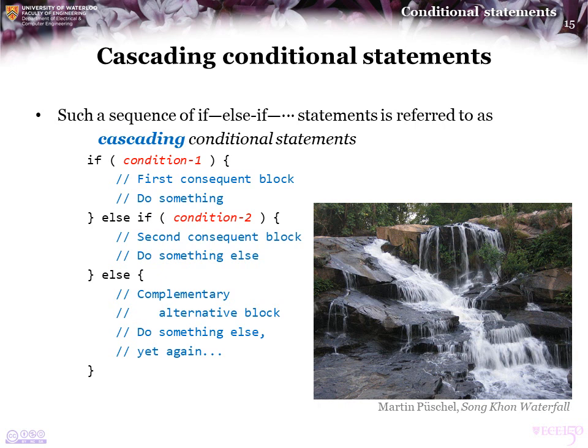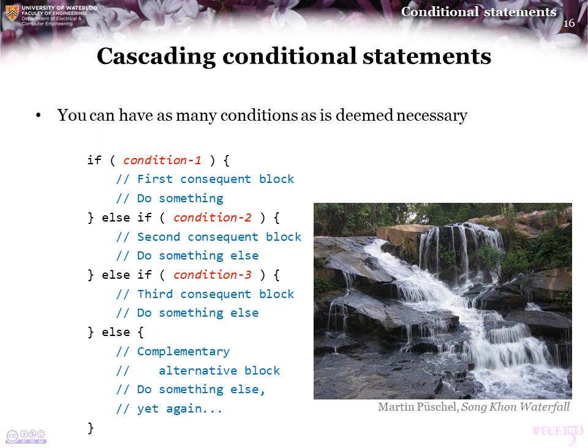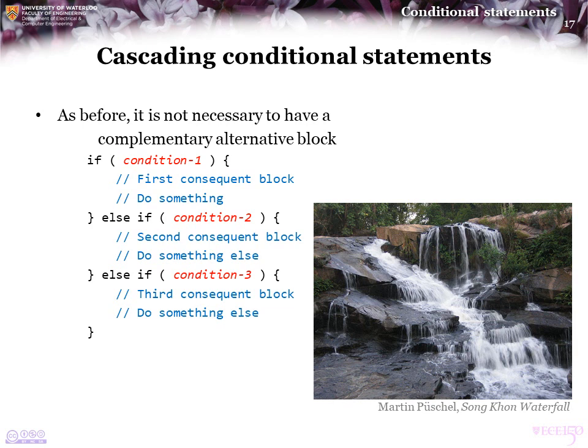Such a sequence of if-else statements is referred to as a cascading conditional statement. If the first condition is true, the first consequent block is executed. If the first condition is false, the second condition is tested; if true, the second consequent block is executed. If both conditions are false, the complementary alternative block is executed. You can have as many conditions as necessary, and it is never required to have the alternative block if you are only executing code based on whether the first, second, or third condition is true.